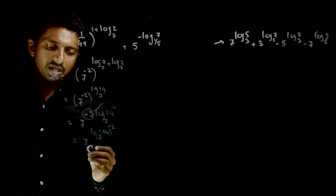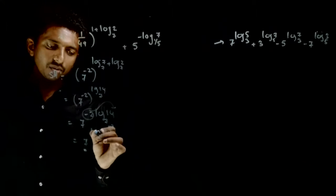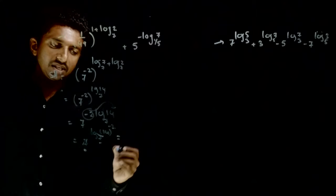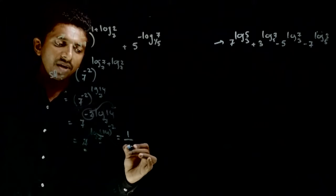14 power minus 2. So you have a 7 here. Base may be 7 here. So all this thing will get cancelled out. So this will be 14 power minus 2 is 1 by 196.